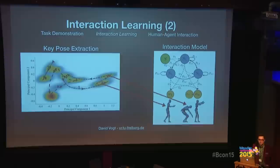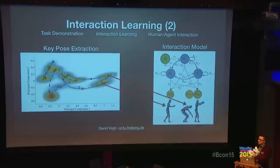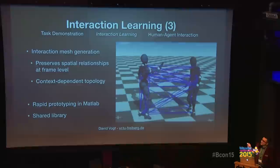Even once we know the interaction, we still need to know which frame within that interaction the user is currently at, and we need to optimize the character's response. If I recorded a high-five interaction and at runtime the user does it slightly differently, the virtual agent must be responsive to that motion too — it needs to adopt its motion accordingly. This can be realized with something called an interaction mesh.